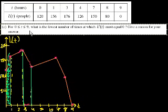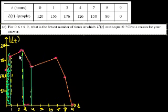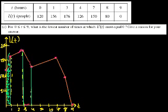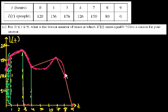Part C: for 0 less than t less than 9, what is the fewest number of times at which L'(t) must equal 0? Give a reason for your answer. L'(t) is the derivative of this function. When I connected those dots, I was sketching a shape — it's really a smooth curve because the function is twice differentiable, which means the derivative is continuous. The real graph might look something like this: it goes up, maxes out, comes down, comes back up, maxes out again, and comes down.